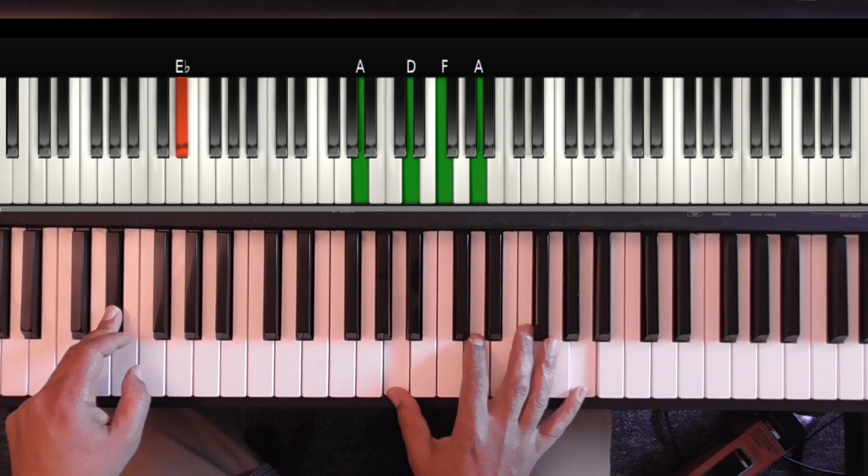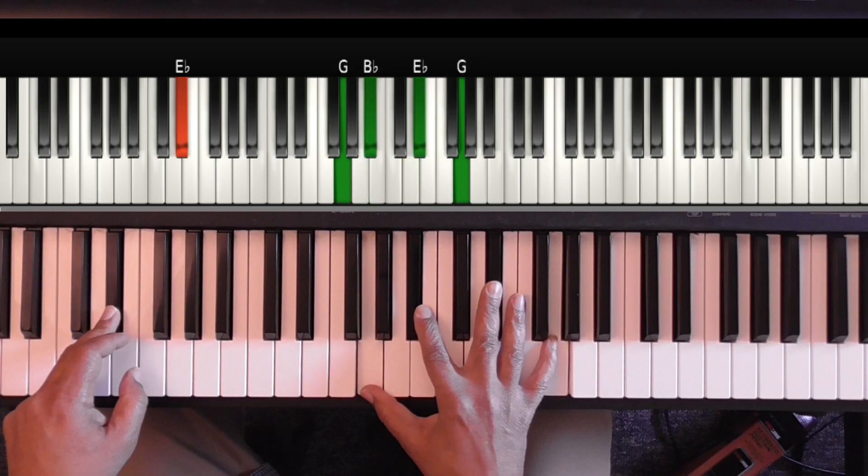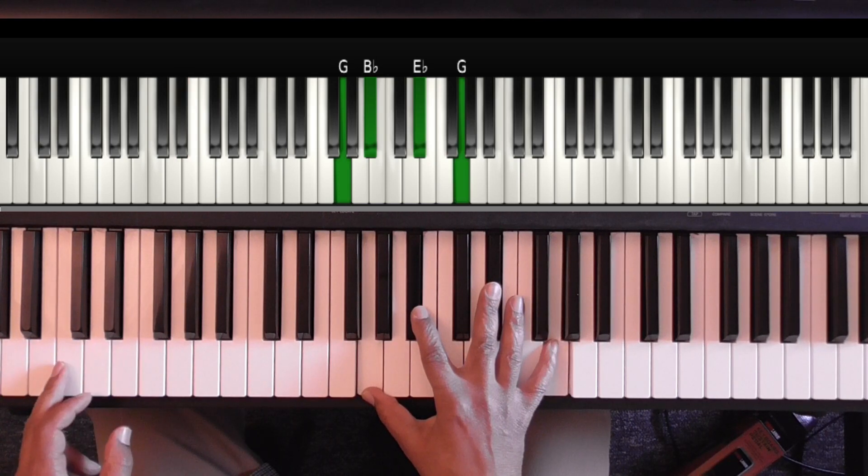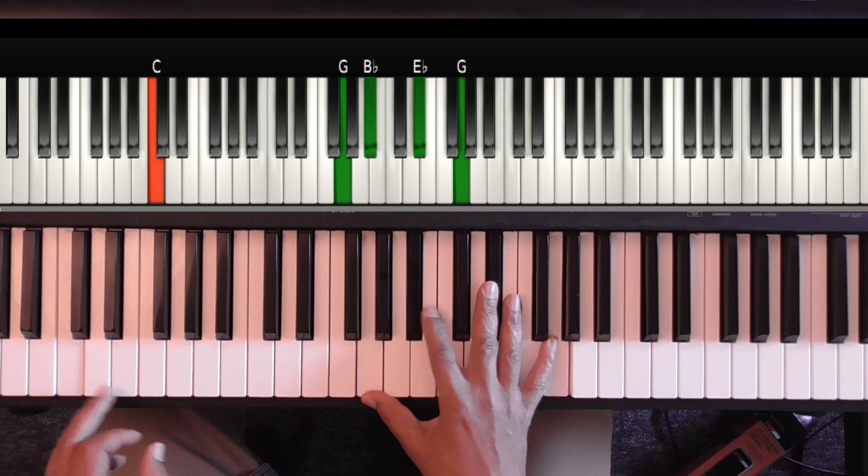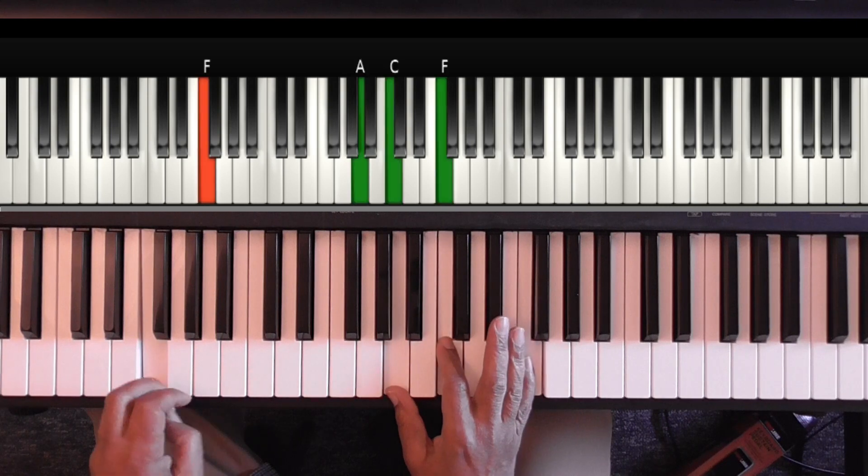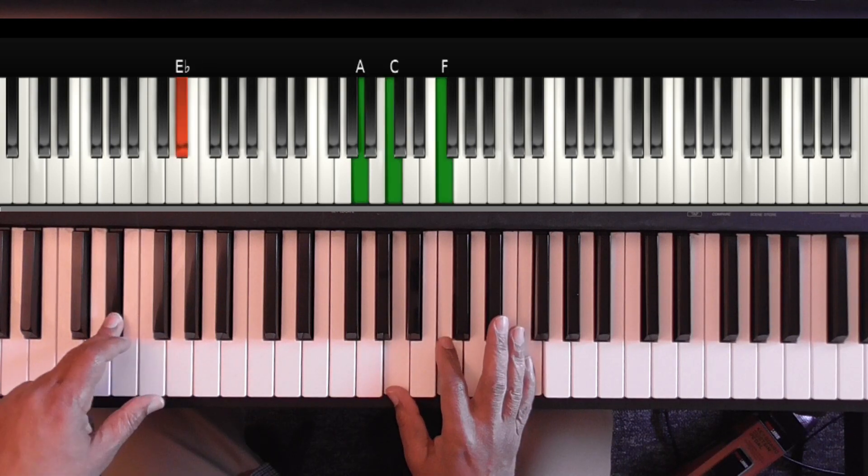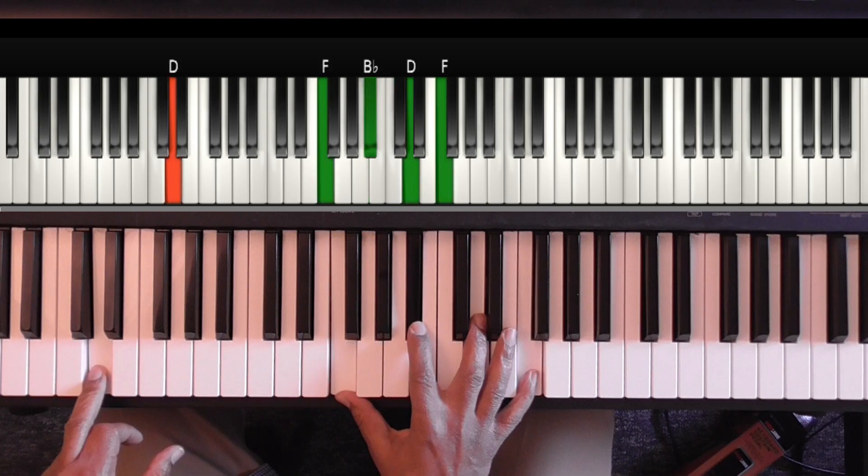D minor. E flat minor 7th. Then to C in the bass, which is C minor 7th. That's the 2 chord. And then 5 chord, which is F. Walk the bass to E flat. And then back to B flat with alternate bass.